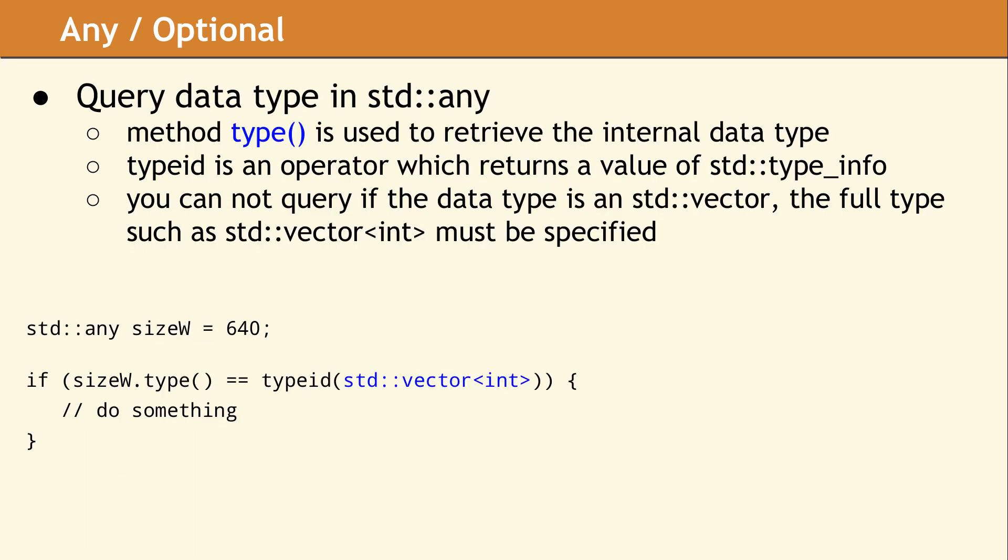The Any class also provides a method called type, which can be used to ask what data type is currently present in the variable. The type method returns an std::type_info value, which can be compared to the return type of the typeid operator. This allows you to determine whether the std::any value matches a specific data type.